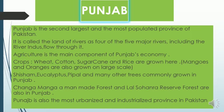Mangoes and oranges are also grown here on a large scale. Shisham, eucalyptus, poplar, and many other trees commonly grow in Punjab. Changa Manga, a man-made forest, and Lal Suhanra Reserve Forest are also in Punjab. Punjab is also the most urbanized and industrialized province in Pakistan.